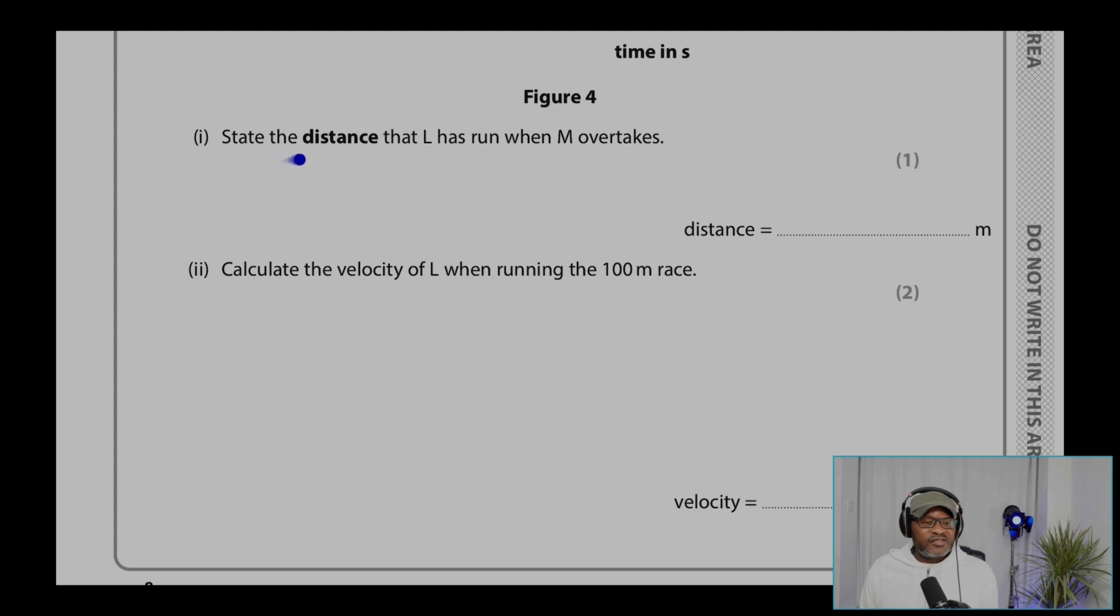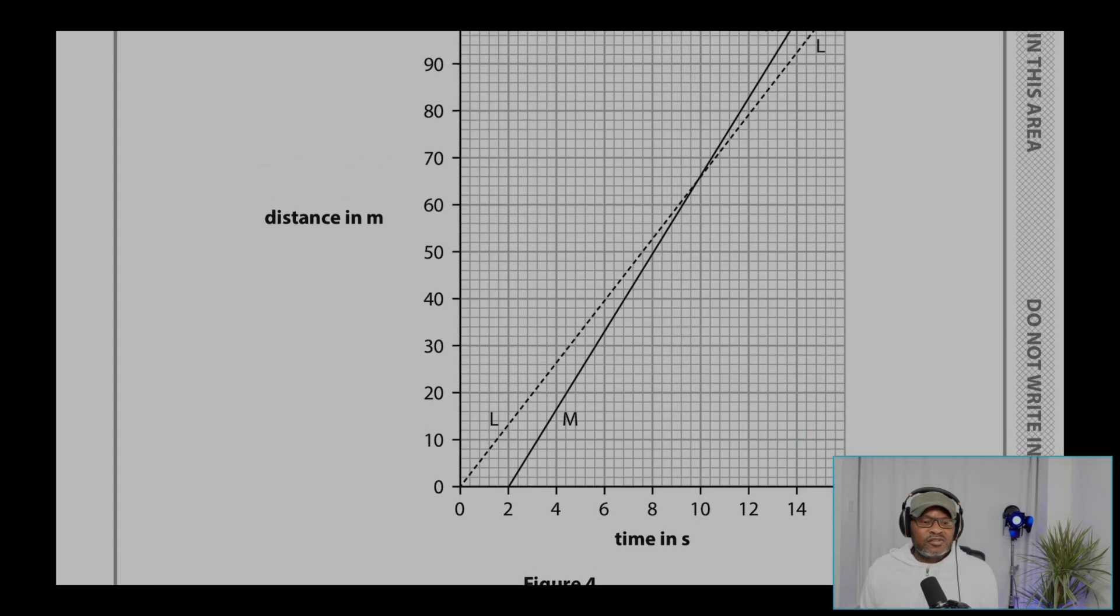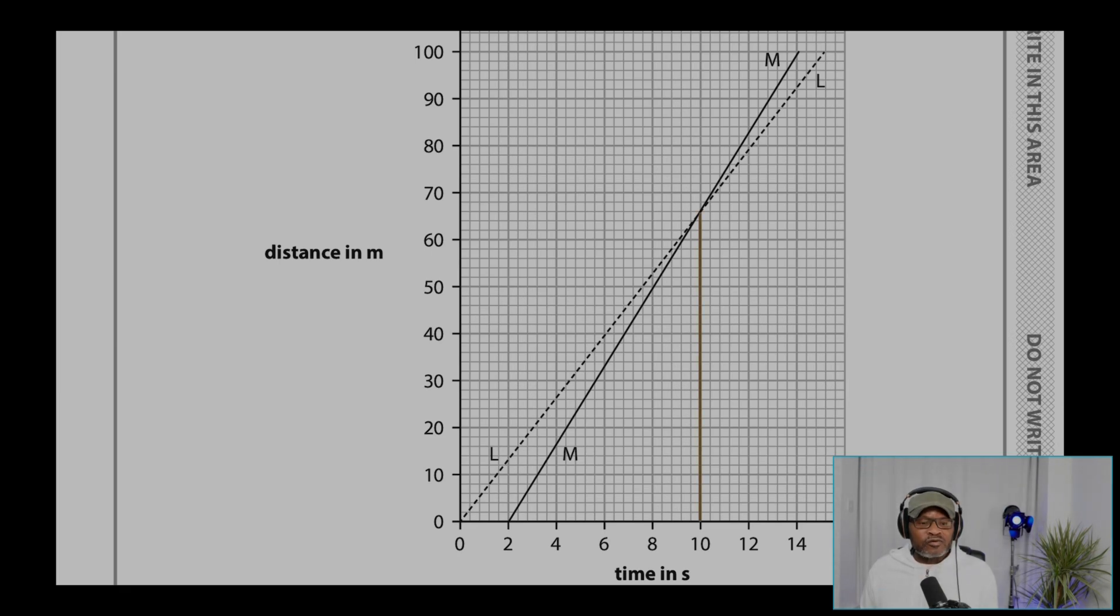Part 1. State the distance that L has run when M overtakes. So the distance, we have to look at 10 seconds here. That's when the overtaking happens. The distance run by L will be at 60,